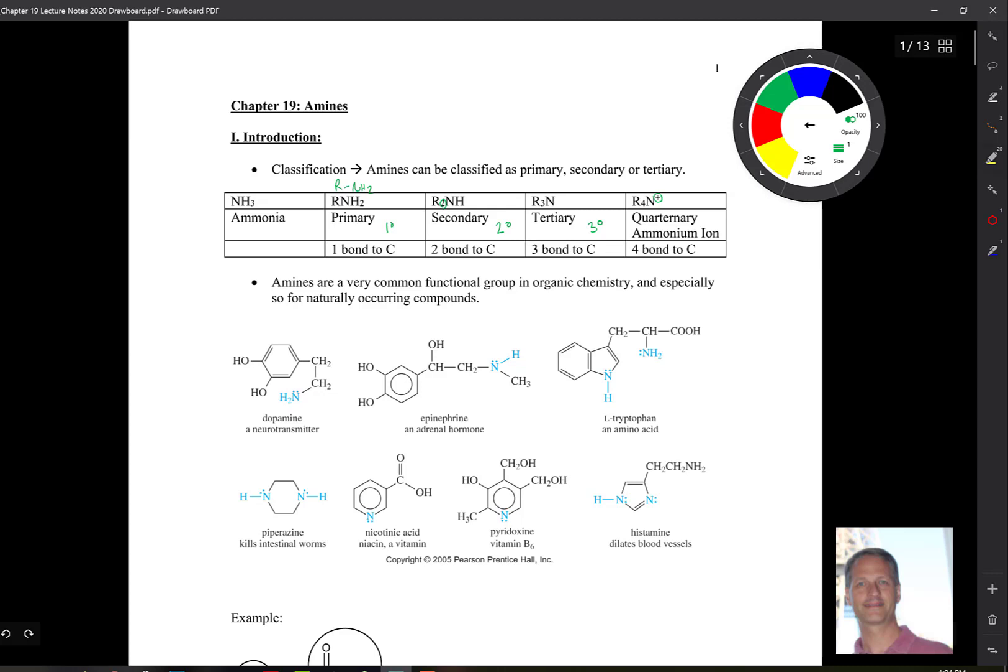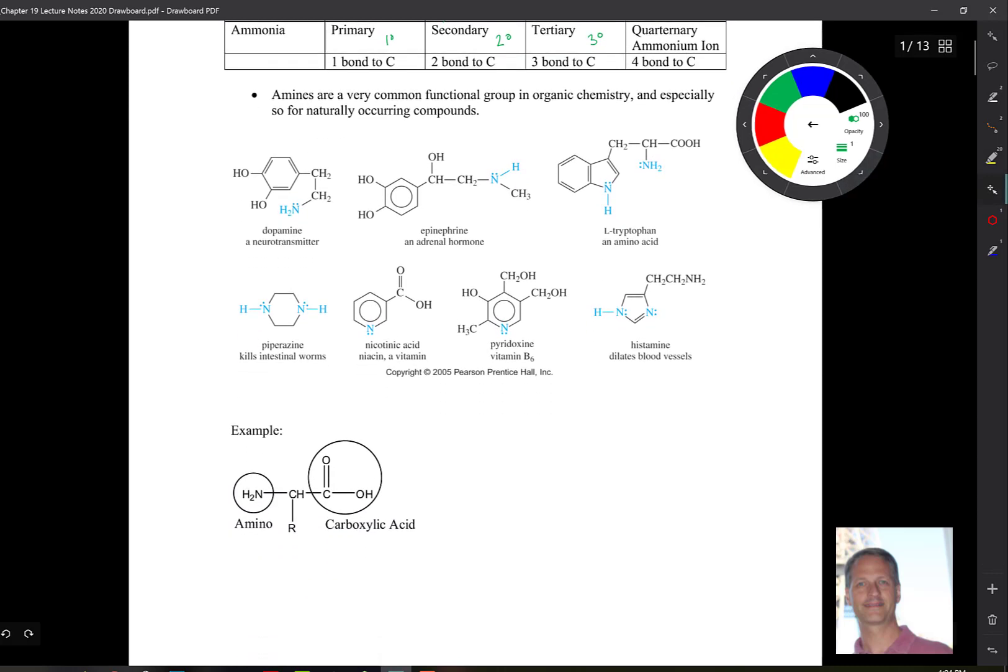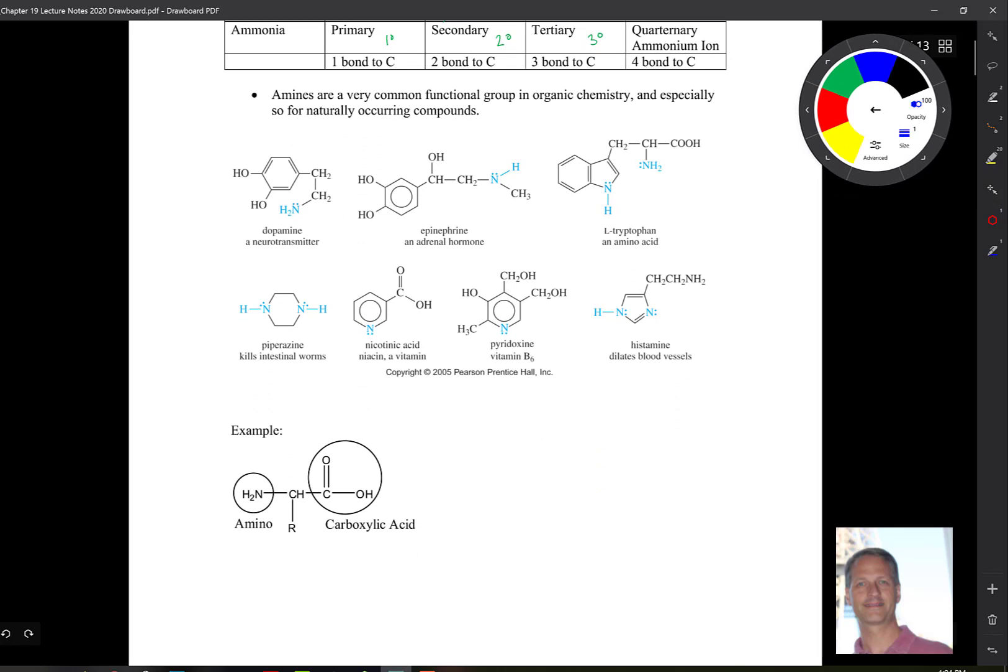So as far as amines found in nature, we see them in all sorts of molecules that you may be familiar with. Dopamine is a neurotransmitter, epinephrine is an adrenaline hormone. Tryptophan is an amino acid.